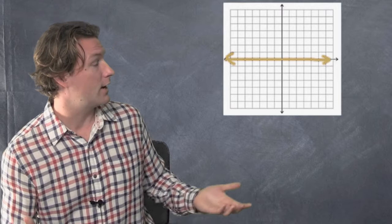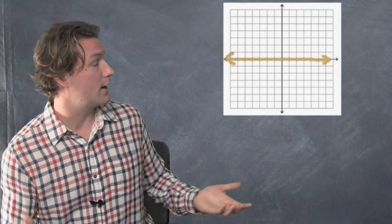I'm going to draw a line where the slope equals zero. Cool. I would say that that line is flat. It's not going up, it's not going down.